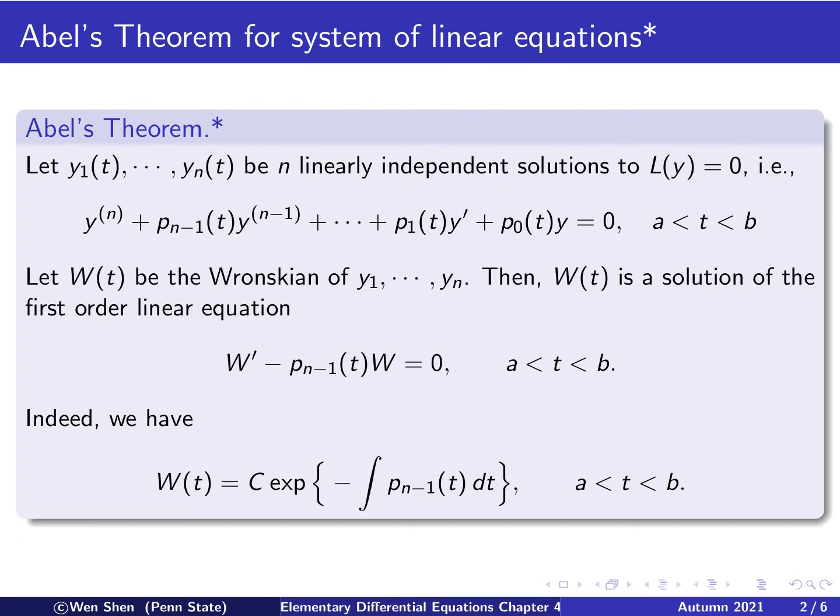Let now W(t) be the Wronskian determinant of these functions. I just call it Wronskian. We know it's a determinant we need to compute. So the Wronskian of these N functions. Then the Wronskian W as a function of t will be a solution of a first-order linear equation written as W' minus p_n-1 of t times W equals 0, valid on the interval t between a and b.